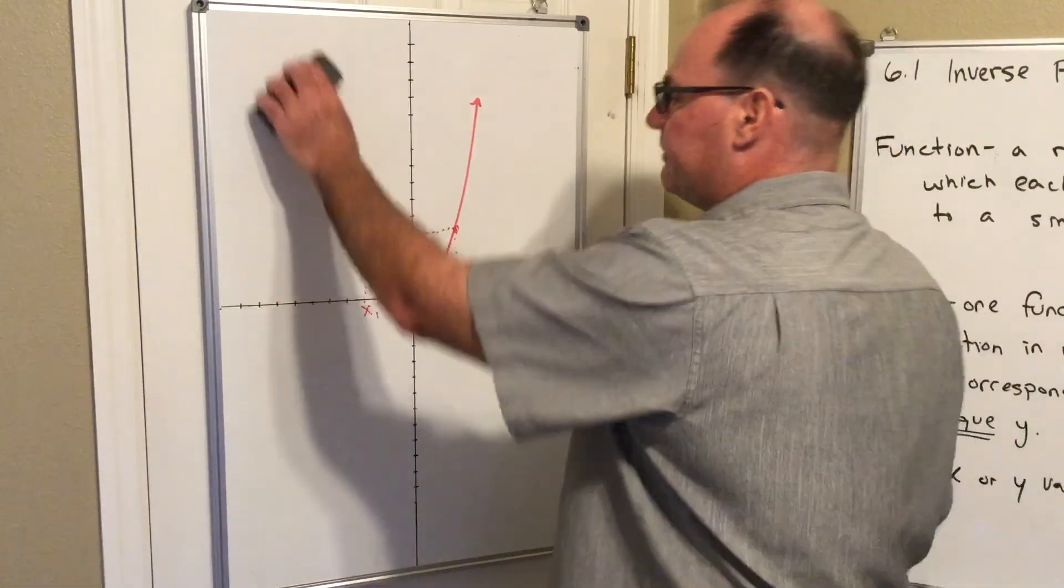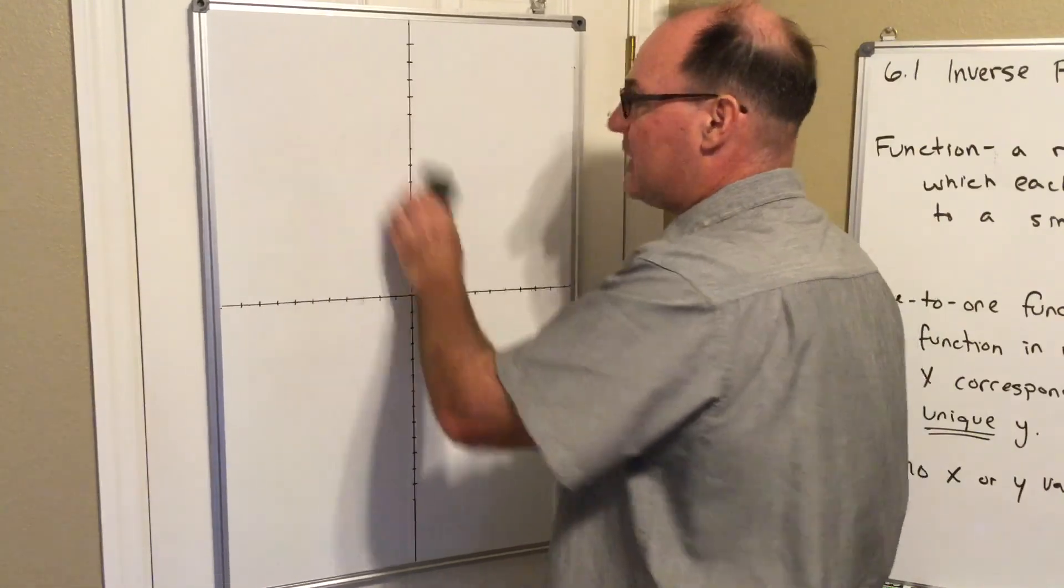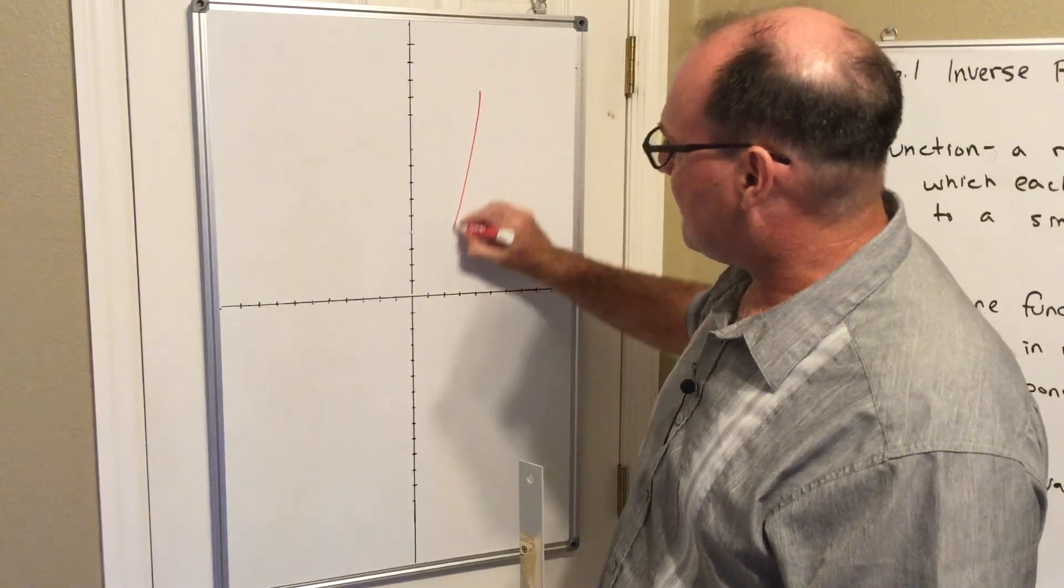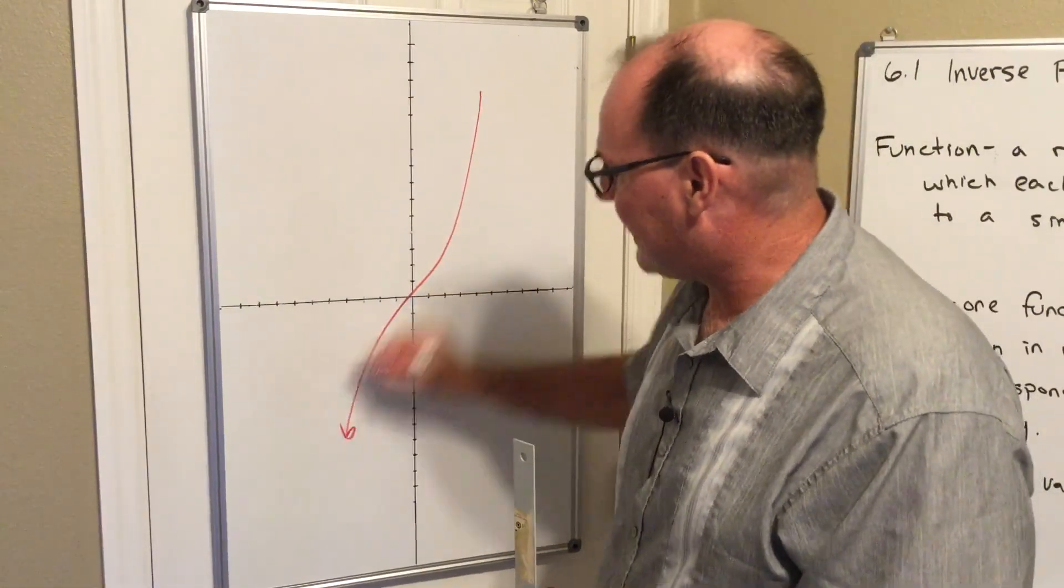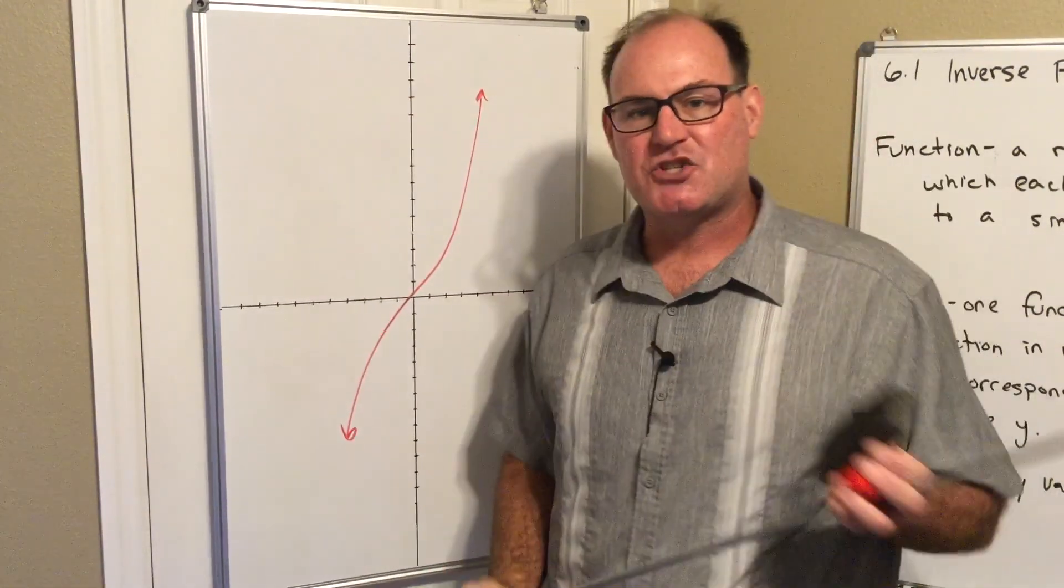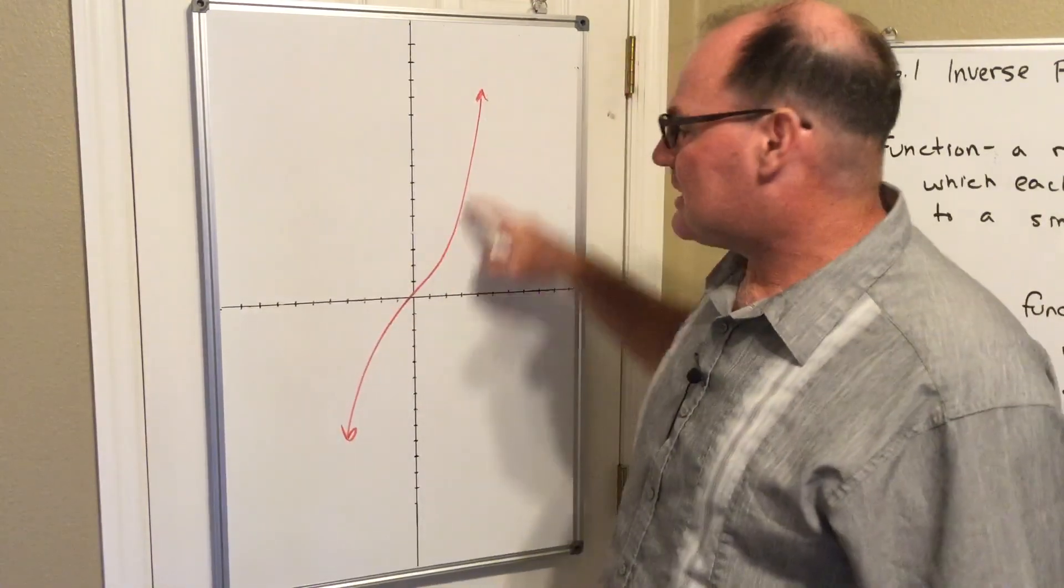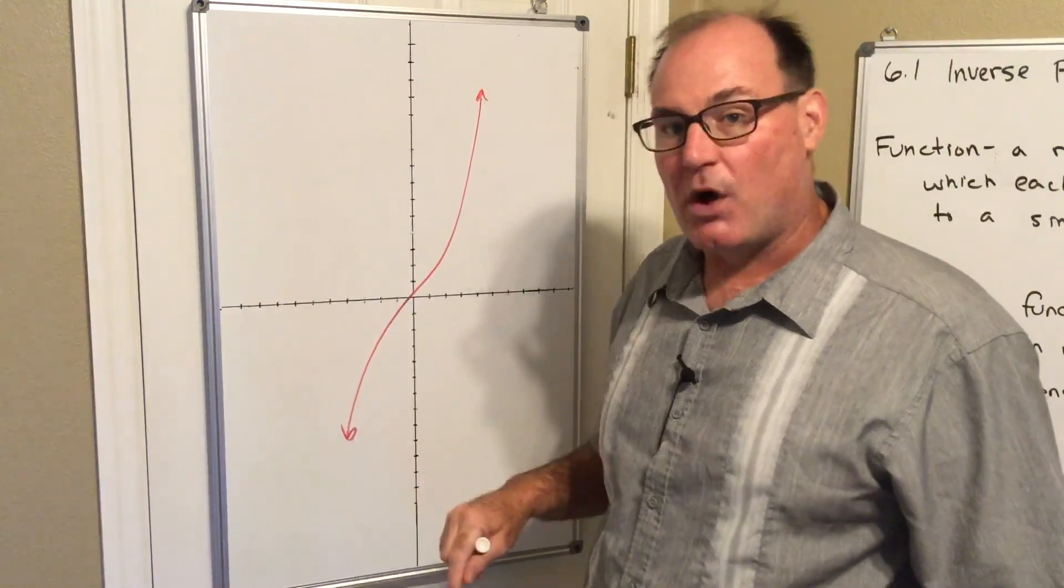So here's a new graph. So here's another basic function. This is my cubic function, or something based on my cubic function. Looks like this. And so here's the question. After I ask it, pause the video. Write down what you think the answer is. Is the cubic function, is this one-to-one?